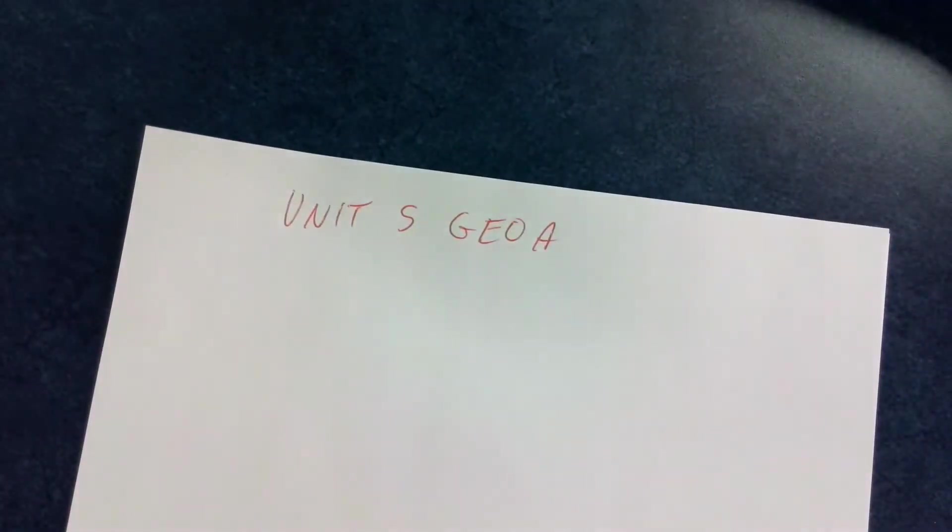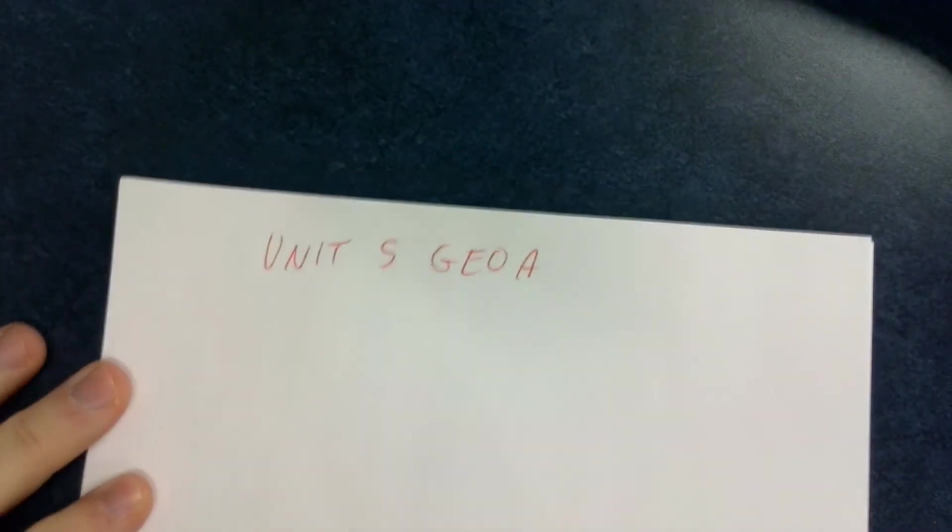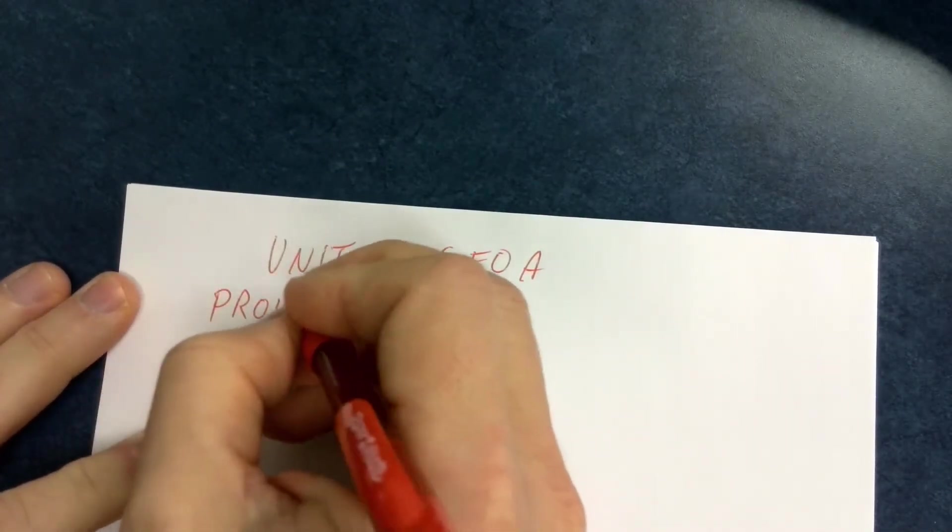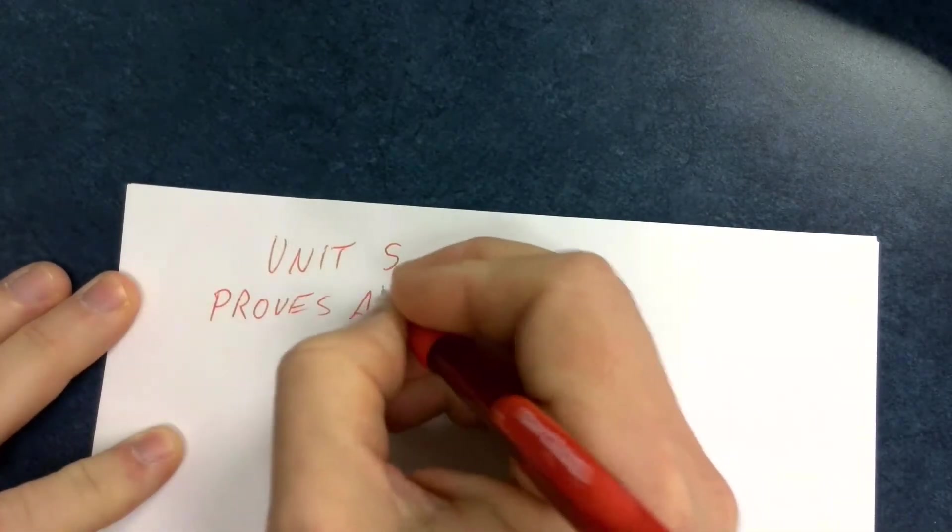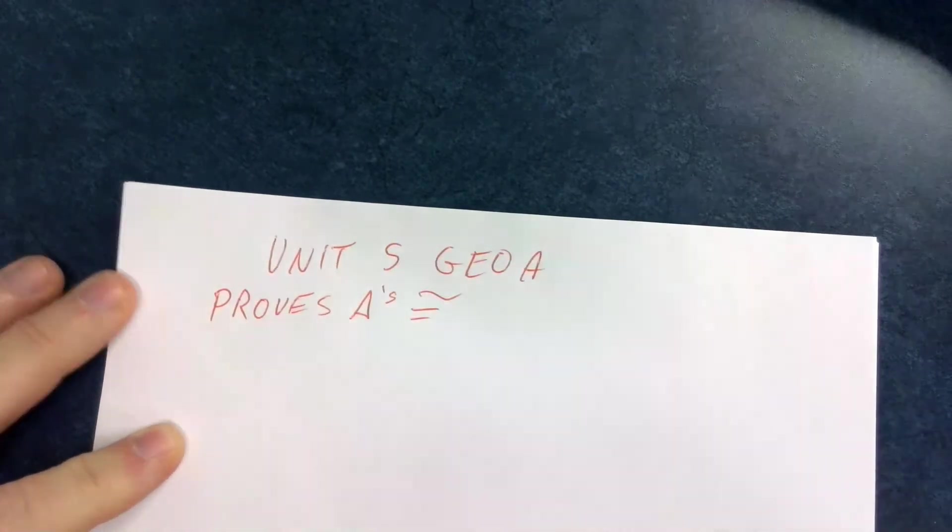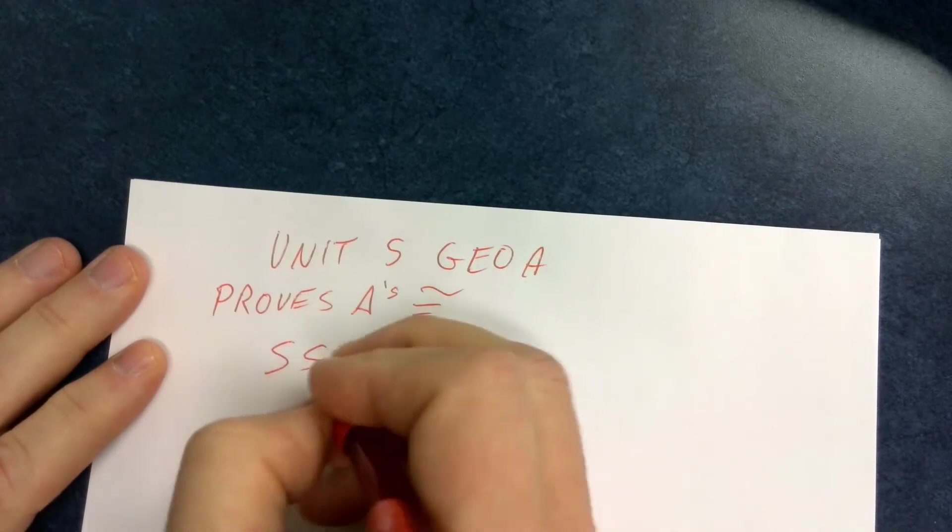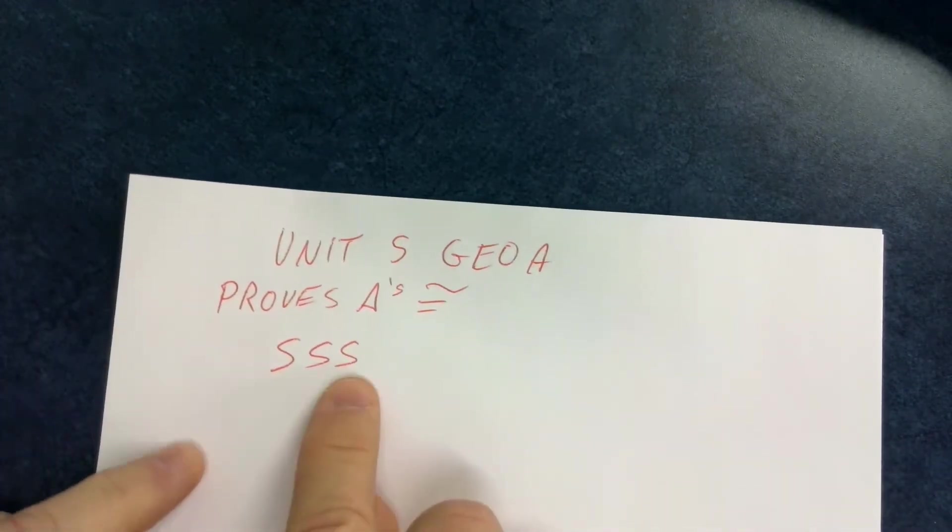So Unit 5 GOA, first things you need to know is what proves triangles congruent. What are some of those things? So we know shortcuts are SSS, which means if all three sides of one triangle are congruent to all three sides of another triangle, that works.